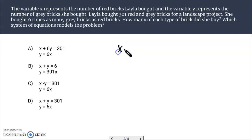So, it's always good to identify your variables. So, they do so in the problem here. X is the number of red bricks, and Y is the number of gray bricks.